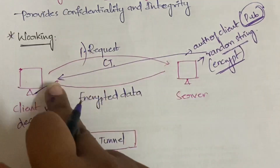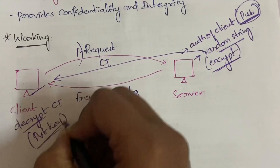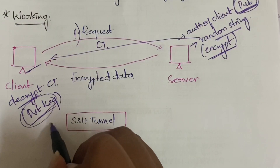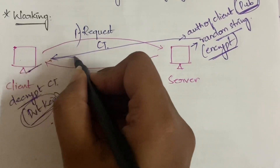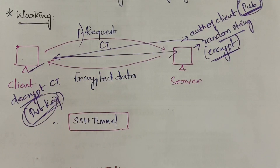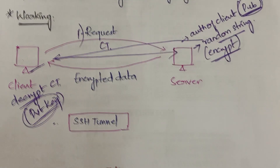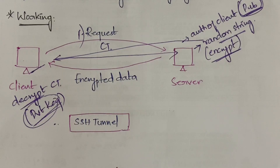The client then decrypts the cipher text sent by the server using its own private key. Once decryption is done, the client sends the decrypted data back to the server. This decrypted data acts as an acknowledgement. The server checks whether the decrypted data matches what it originally sent — if it does, the client is confirmed as a trusted client with matching keys.